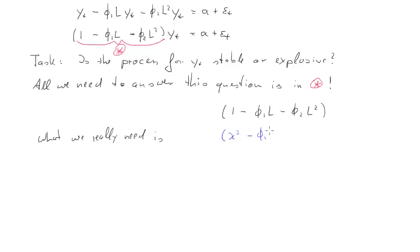And you should see some similarities already, but there are also some differences. So the coefficients appear in exactly the same way, but the L's have somehow disappeared and are now replaced with lambdas. Now this is called the characteristic equation.